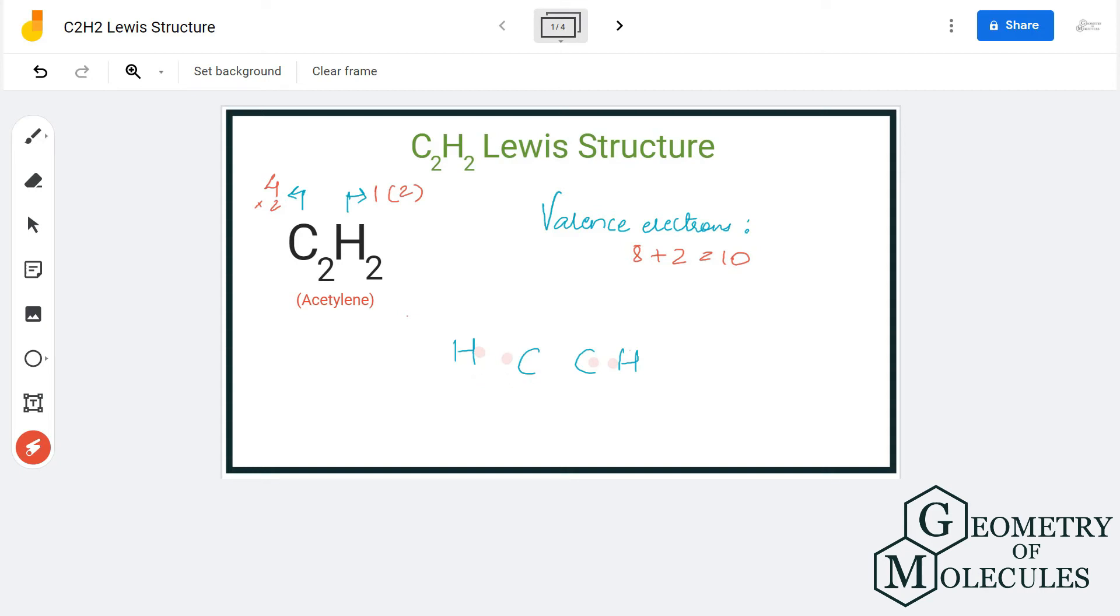Now if you look at the carbon atom, it doesn't have eight valence electrons in its outer shell, which means it doesn't have a complete octet and it requires to complete its octet to attain a stable structure. There are three valence electrons with each carbon atom to complete the octet, and we will form one bond to share the electrons.